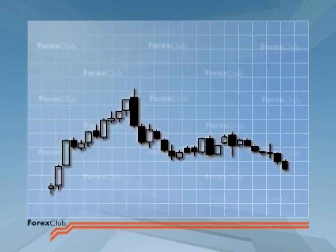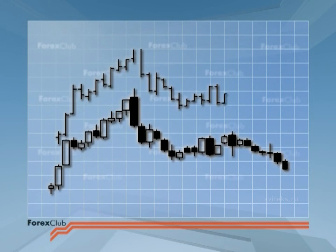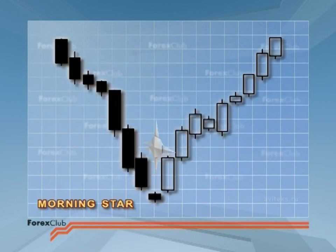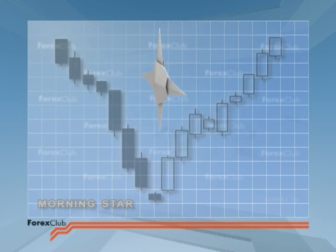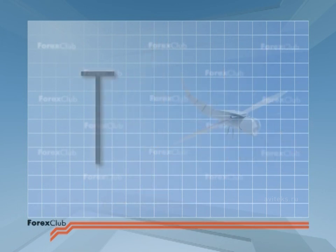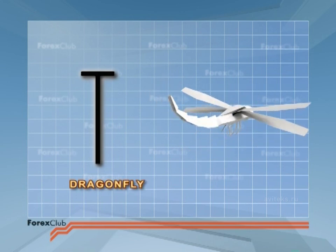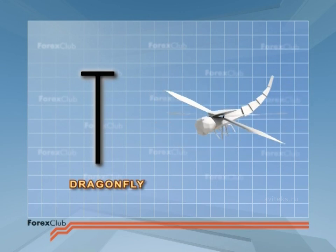Many people feel that candlesticks are more aesthetically pleasing, and of course the west has had an enduring fascination for all things eastern. The very names of the patterns, for example the morning star, dark cloud cover, and the dragonfly doji, are evocative and have a sort of mystical romance.